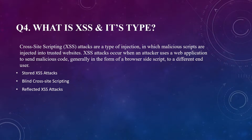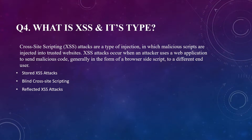Question number four: what is XSS and its types? This is an interviewer's favorite question — I get asked this so many times, so I recommend preparing it really well. Cross-site scripting, or XSS, attacks are a type of injection in which malicious scripts are injected into trusted websites. XSS attacks occur when an attacker uses a web application to send malicious code, generally in the form of a browser-side script, to a different end user. There are three types: stored XSS, blind cross-site scripting, and reflected XSS.